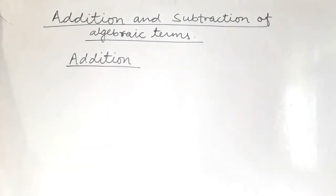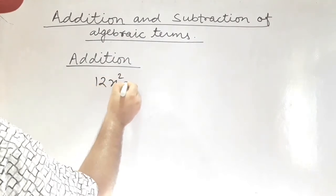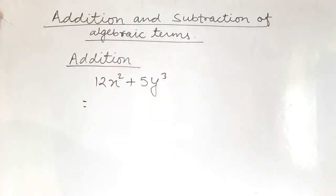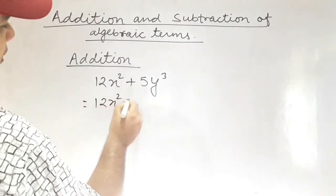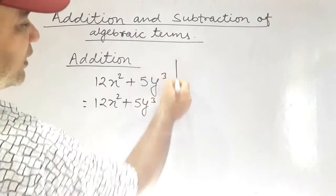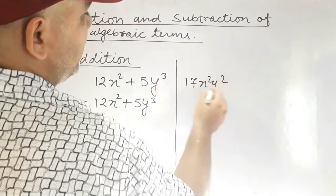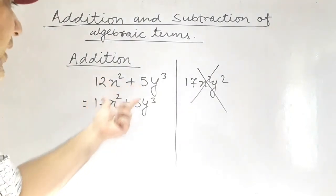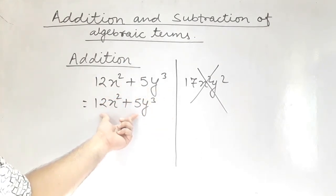What happens if unlike terms are added? For example, 12x squared plus 5y power 3. Can we add them? No, we cannot add them, since unlike terms are never added. We shall write them as they are: 12x squared plus 5y power 3. Some students mistakenly write 17x squared y squared, which is totally wrong. Unlike terms cannot be added, so we write them as they are.